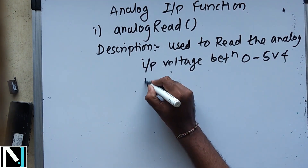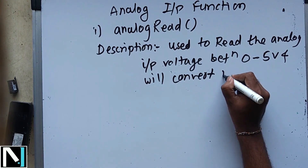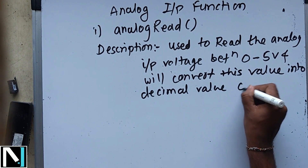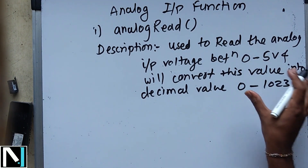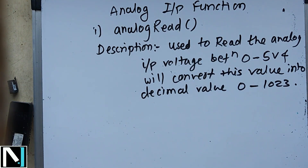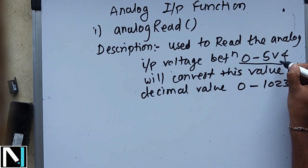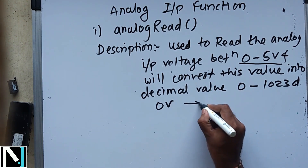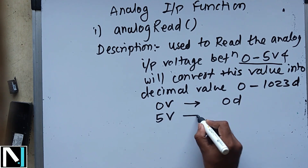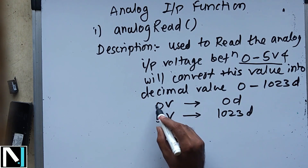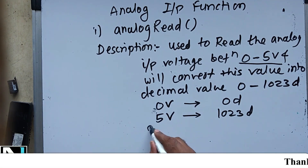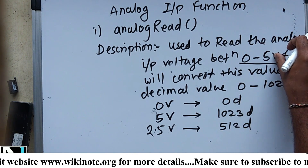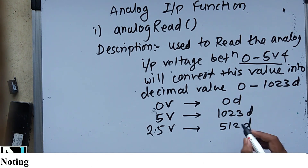The analog input voltage between 0 to 5 volts gets converted into a decimal value ranging from 0 to 1023, using the internal ADC of the ATmega328P microcontroller. For 0 volt input the decimal value is 0, for 5 volt input the value is 1023, and for 2.5 volts the value is 512.